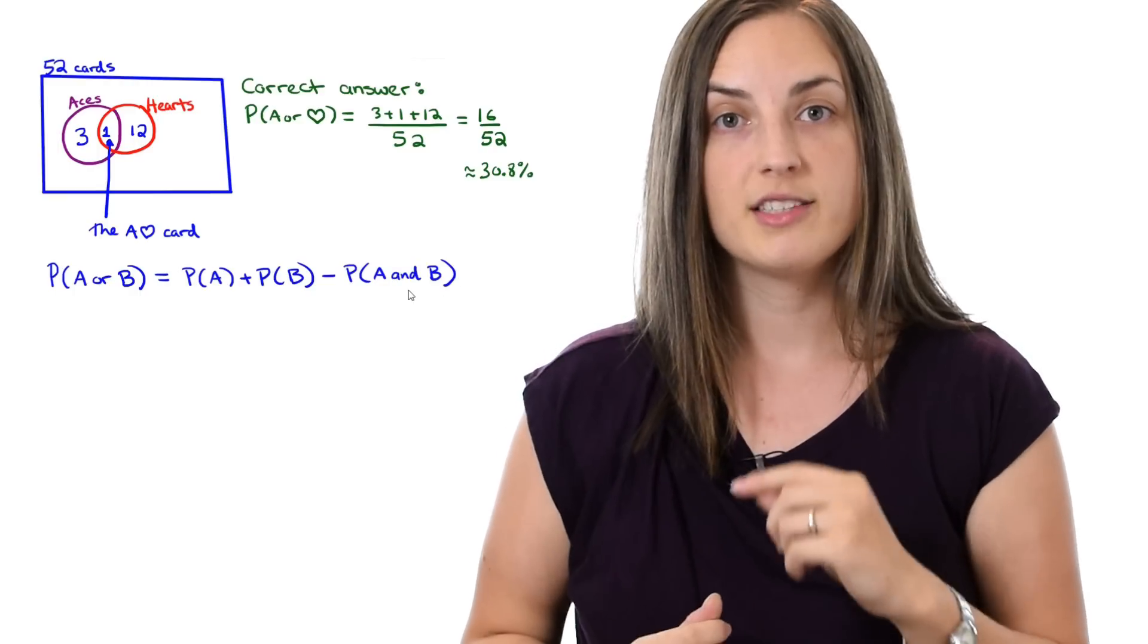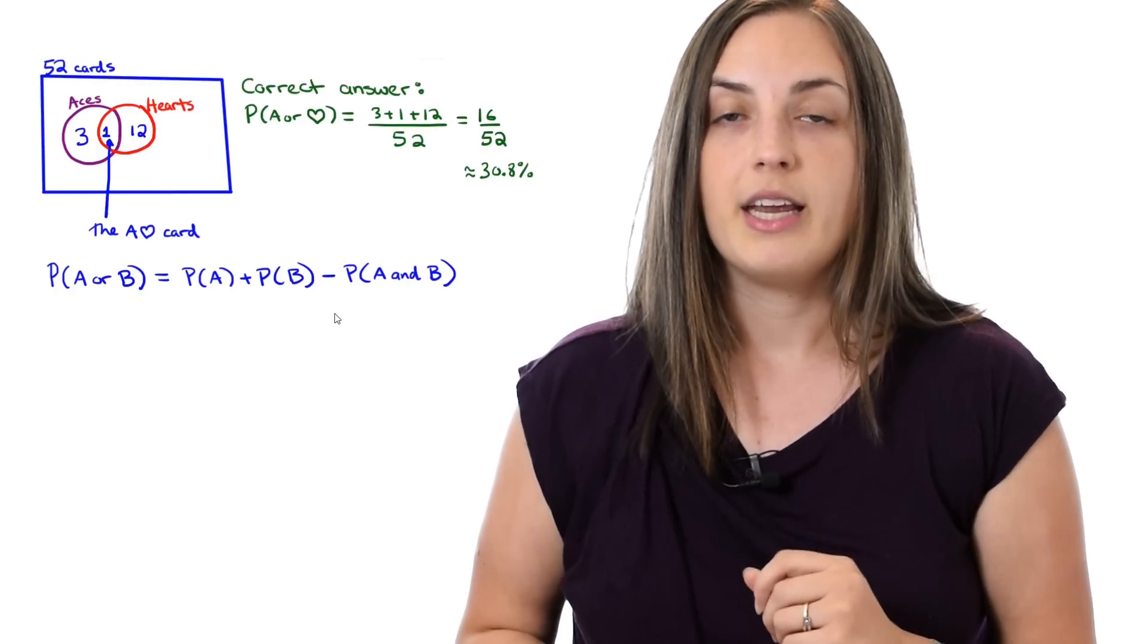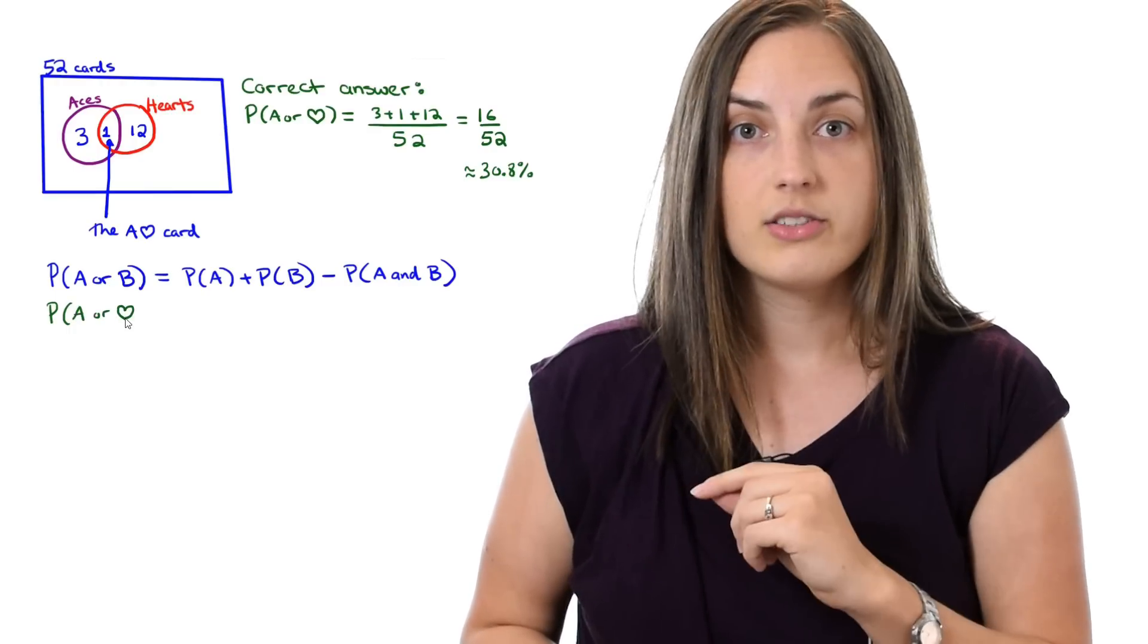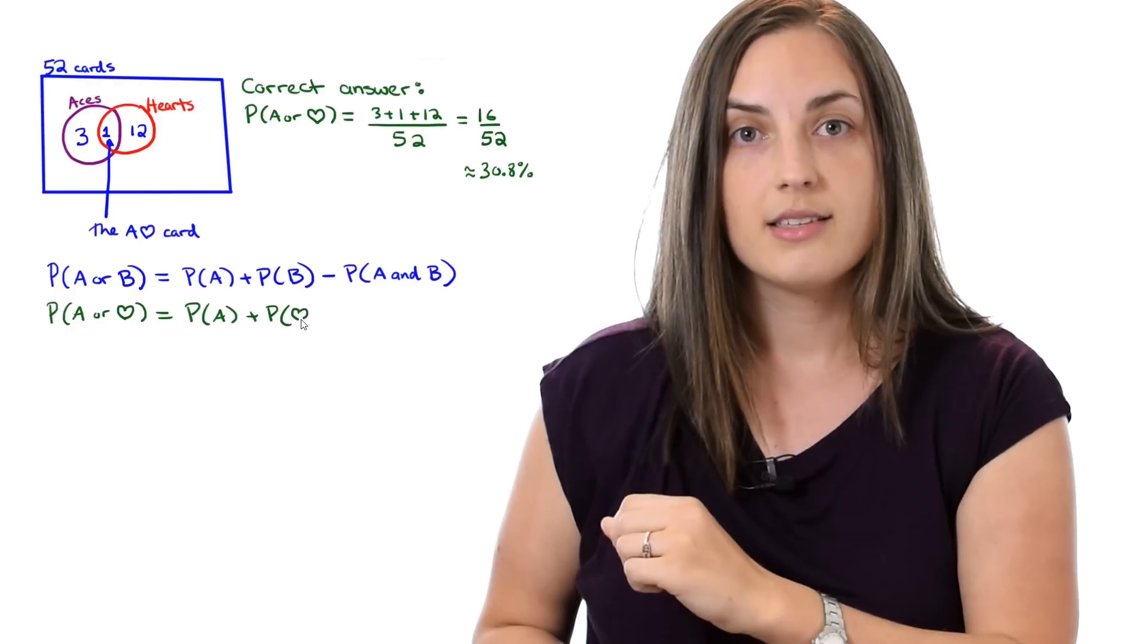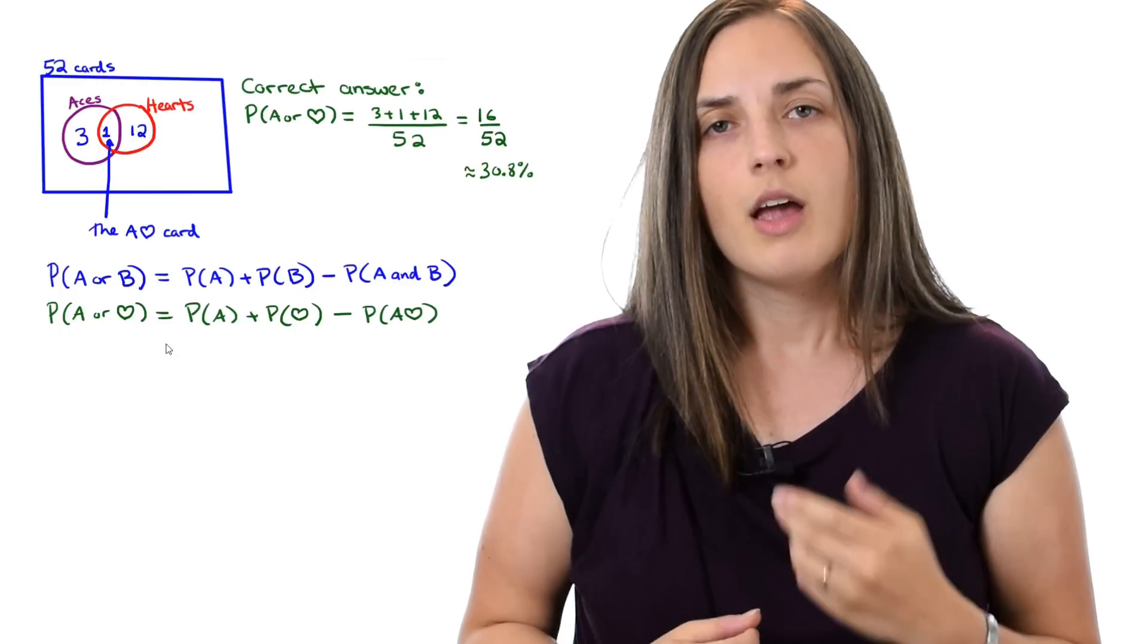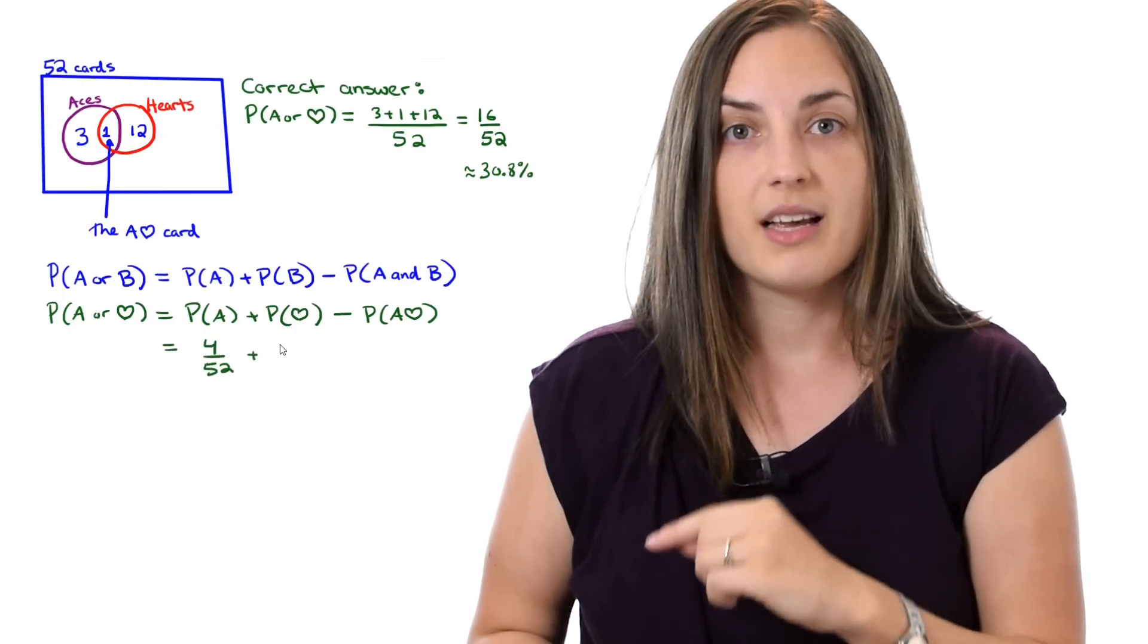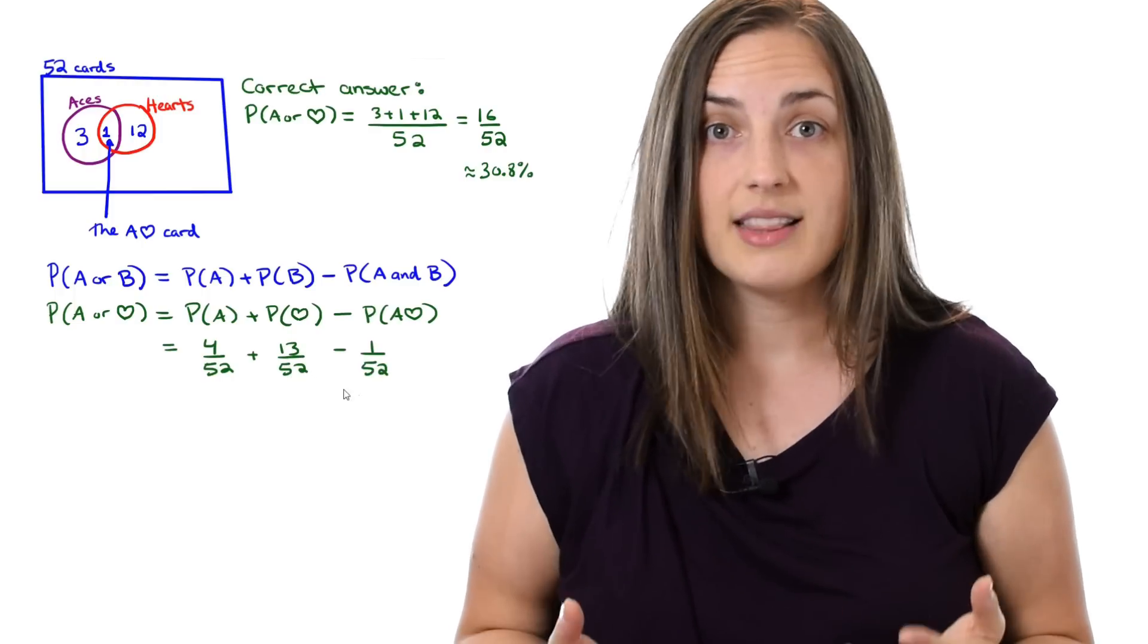If we think about this equation in terms of the example we just saw, this is like saying the probability that the card we pick is an Ace or a Heart is going to be equal to the probability that's an Ace plus the probability that's a Heart minus the probability that it's both, so it's an Ace of Hearts. And that's exactly what we see. That gives us 4 out of 52 plus 13 out of 52 minus 1 out of 52. Notice we get the same result.